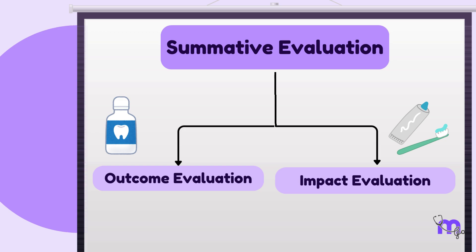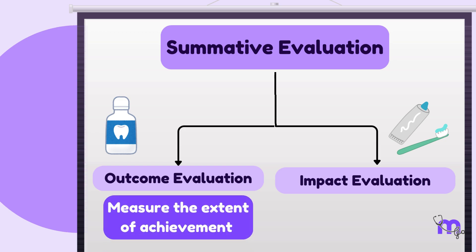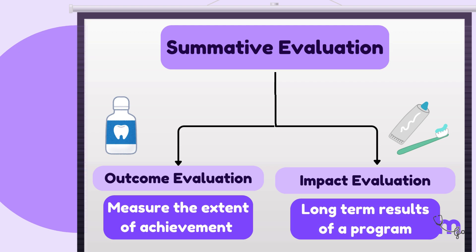In cases where the summative evaluation is carried out to measure the extent to which the program has achieved its target outcomes, it is referred to as the outcome evaluation. On the other hand, when we evaluate the long-term results of a program, we call it the impact evaluation.